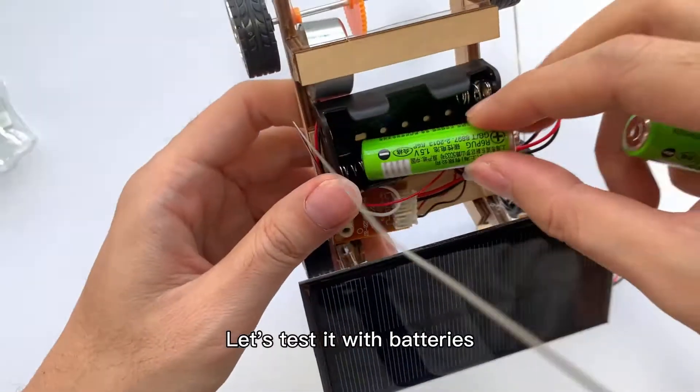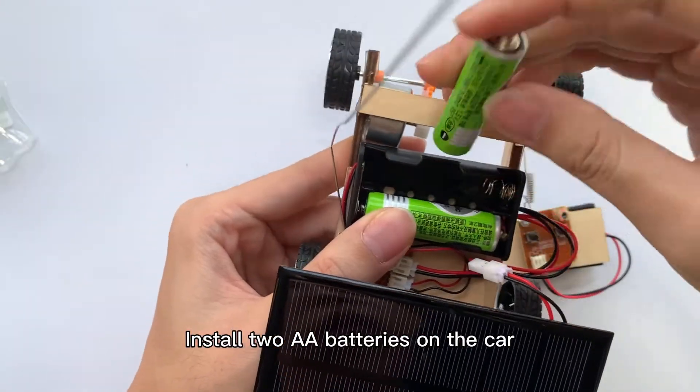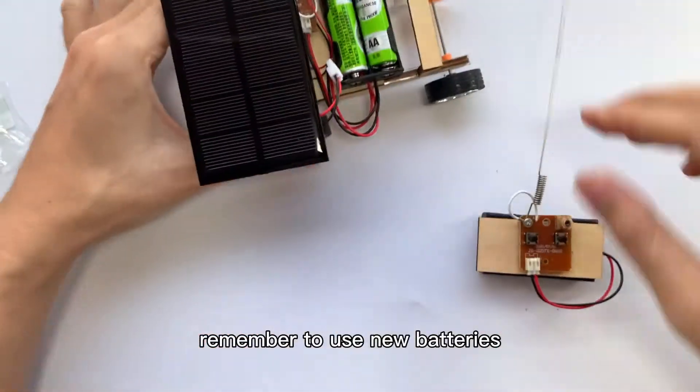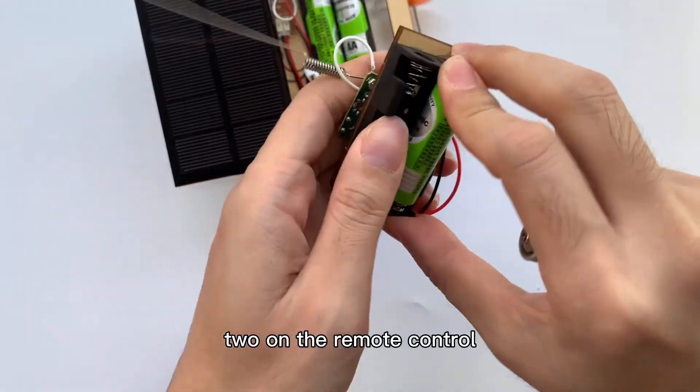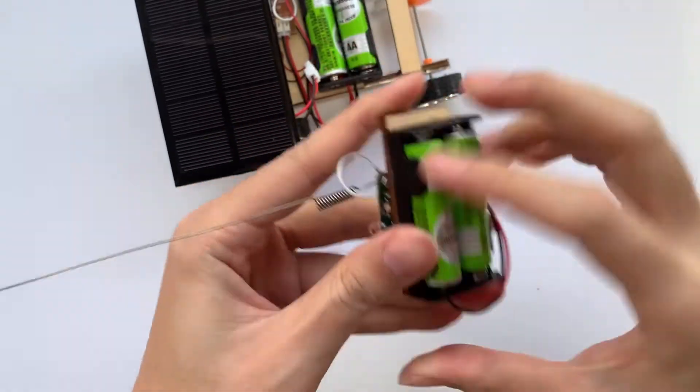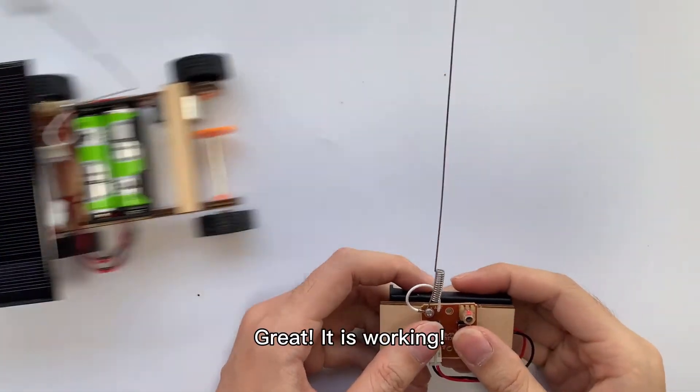Let's test it with batteries. Install two double A batteries on the car. Remember to use new batteries, two on the remote control. Great, it is working.